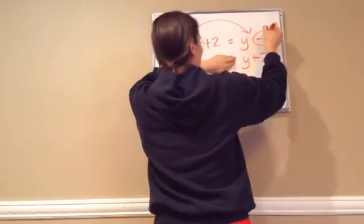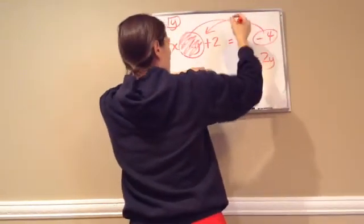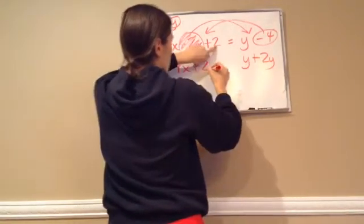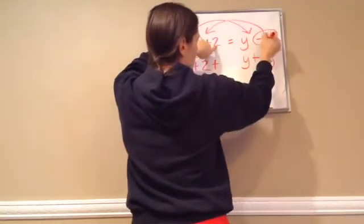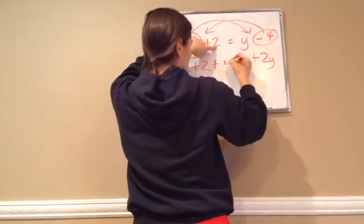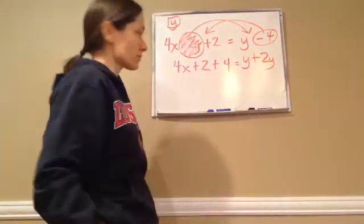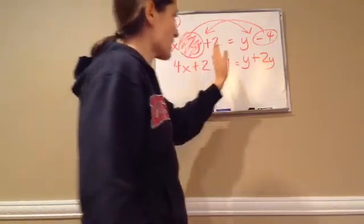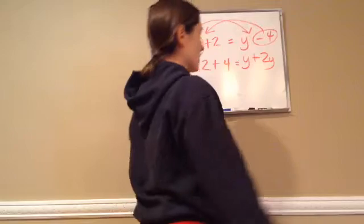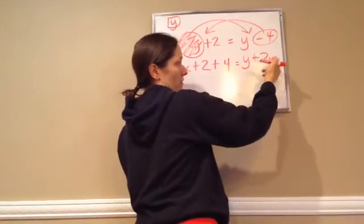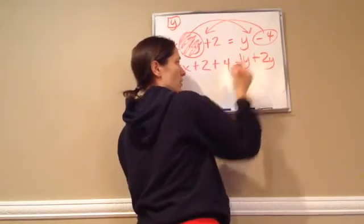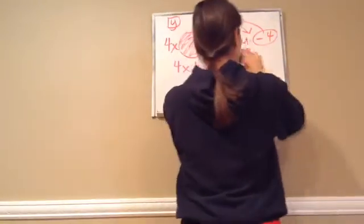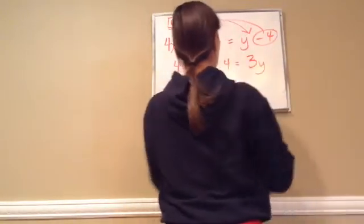And now I'm going to move this minus 4 across the equal side here to make it a plus 4. So now this becomes 4x plus 2 plus, instead of being minus 4, it's going to be a plus 4 equals. So I've got all my other letters and all my other numbers on one side, and then I've got my y's on the other. So this is kind of like saying I have two tigers and one tiger, which makes me have three tigers. Three y.